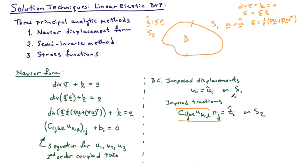For select problems, you can approach a solution using the Navier form, especially when there's a lot of symmetry. For instance, if you had a sphere with internal pressure, the motion is radial — only a radial displacement depending on the radial coordinate. You can use symmetry and other information about the boundary value problem to simplify Navier's equations, which in general are challenging to solve using classical PDE methods. This technique is usually employed when there's a lot of symmetry in both the geometry and the loading.